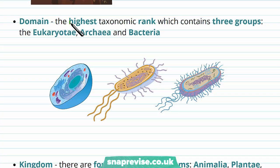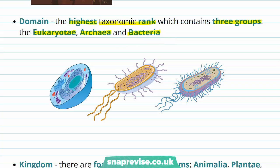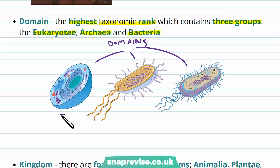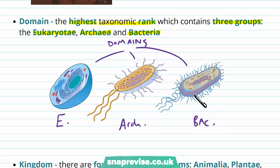The domain is the top ranking taxonomic rank in this system, and it contains three groups. Those domains are eukaryotes, archaea, and bacteria. Scientists classify all organisms into one of these three domains based on the type of cells the organism has. Archaea have particular features such as resistance to high temperatures, and bacteria are, for example, prokaryotes.